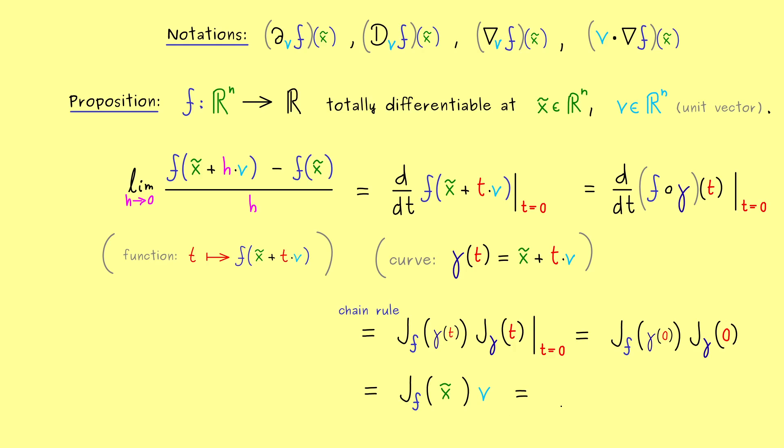Or if you want to write it with the gradient, it's the inner product of the gradient of f at the point x̃ with v. So this formula here now explains the strange notation we have seen for the directional derivative above. Moreover, it also explains why the gradient is such an important concept in multivariable calculus. Indeed, this expression here gives us more geometric interpretation for the gradient. However, this is now a topic for the next video. So surely we should meet there and have a nice day. Bye!